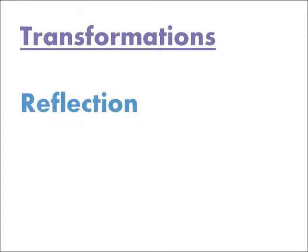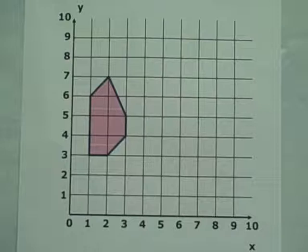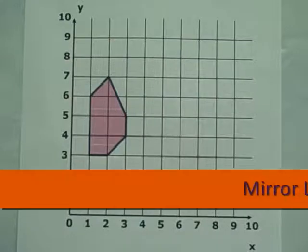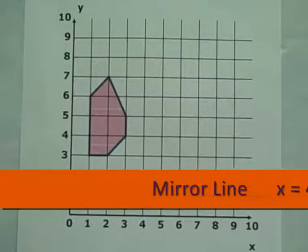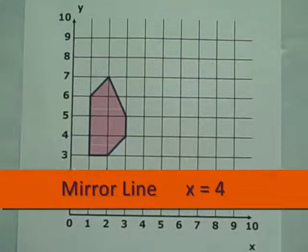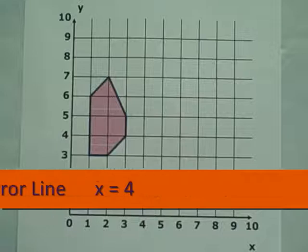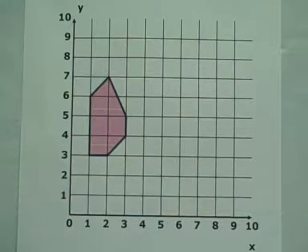Today we are going to learn how to reflect a shape in a mirror line. Our first mirror line has the equation x equals 4, so it passes through (4,0), (4,1), (4,2) and so on, and looks like this.